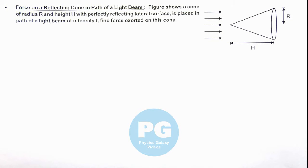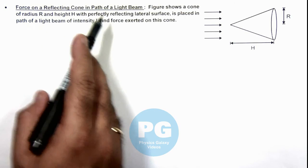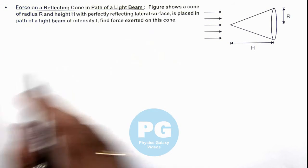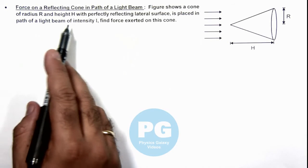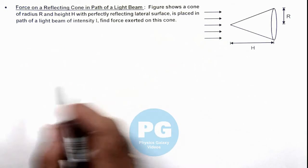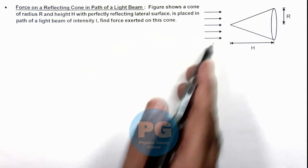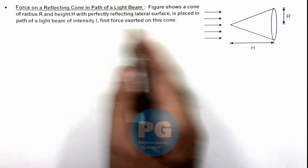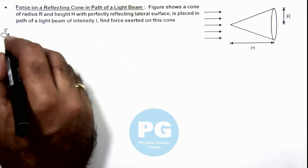In this illustration we'll be discussing the force on a reflecting cone in the path of a light beam. The figure shows a cone of radius R and height h with a perfectly reflecting lateral surface placed in the path of a light beam of intensity I. We are required to find the force exerted on this cone.